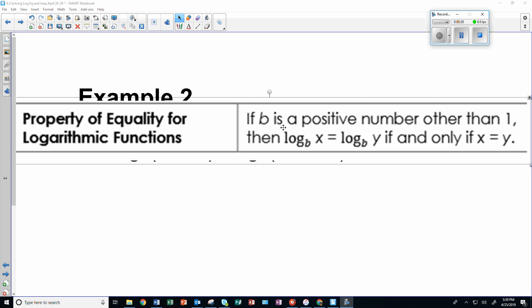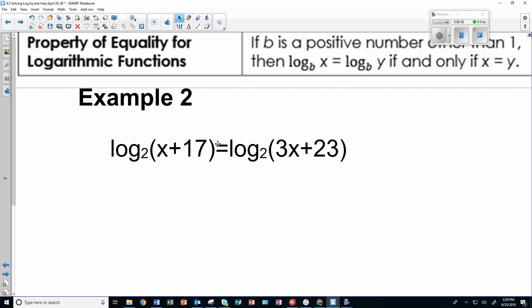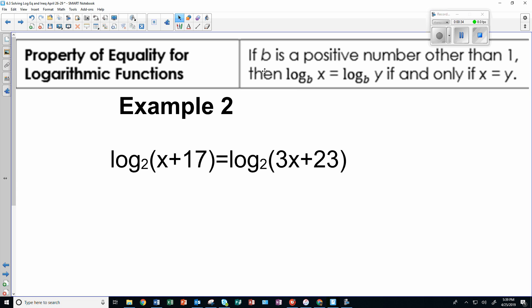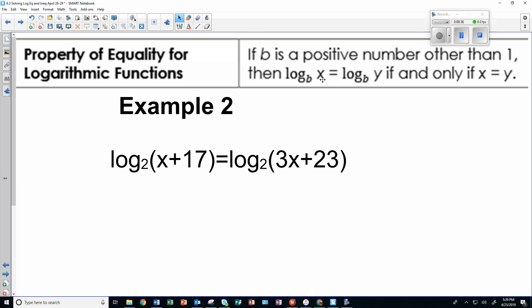The logs are the same, the bases are the same if they're equal. So let's use that with example number two, because you have this situation. This is the exact situation. So here, the arguments must be equal if the logs are the same. That means x plus 17 must be the same as 3x plus 23, because the logs have the same base.